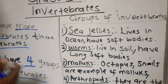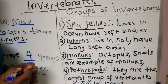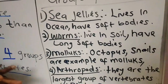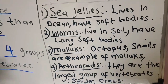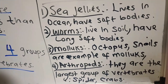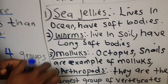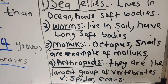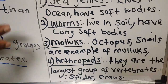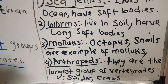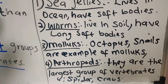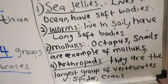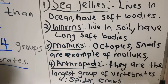We have the sea jellies. They live in the ocean and they have soft bodies. We have the worms. Worms live in the soil and they have long and soft bodies. Then we have the group of mollusks. We have the octopus and the snails. They are examples of mollusks. They have soft bodies, but they have a hard cover outside their body that protects them.